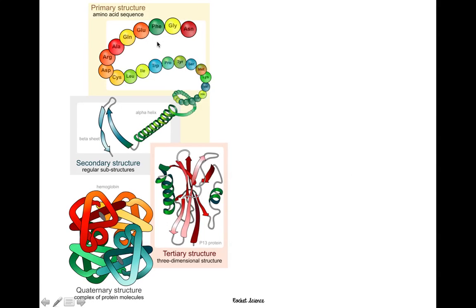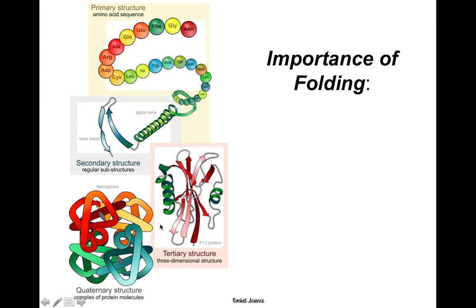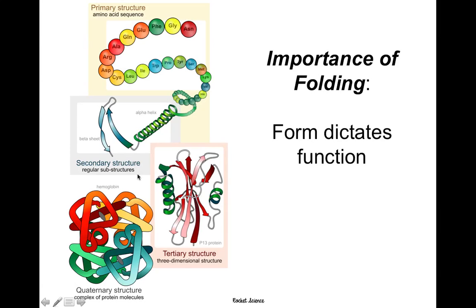There's a really complex structure to proteins — they have four levels of structure that we're not really going to get into. But what's important is that they fold into very specific structures. The folding matters because the form or shape of the protein dictates the function of the protein. So the shape determines what it does and what its specific purpose is.